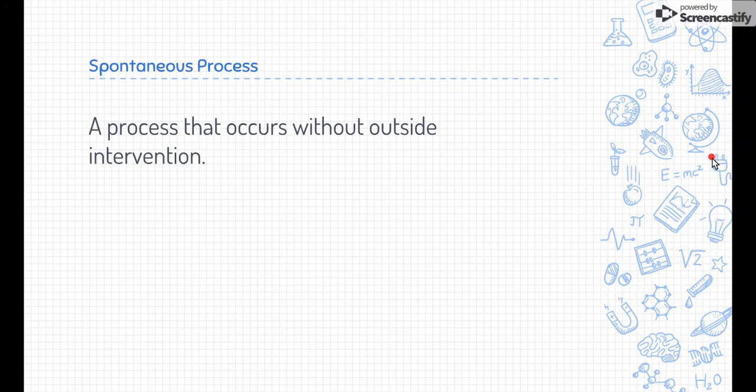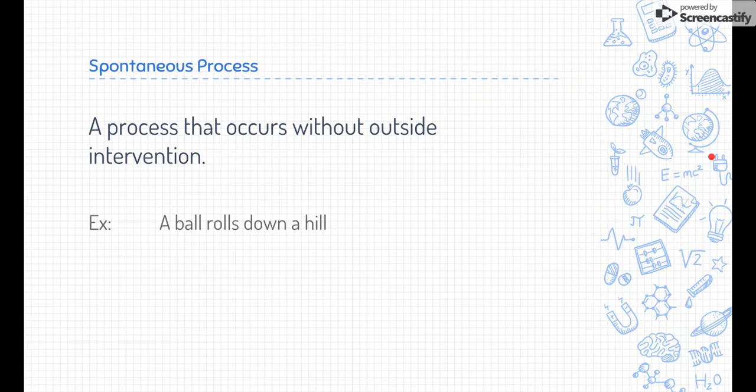So spontaneous process. A spontaneous process is a process that occurs without any outside intervention. What we mean by that is it happens naturally. You don't need to do anything to it to cause it to happen. For example, and these are non-chemistry related examples.